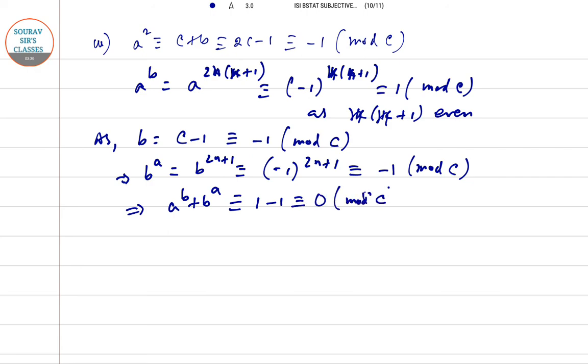So A to the power B plus B to the power A is 1 minus 1 equals 0 for modulo C. This gives you directly A to the power B plus B to the power A is divisible by C, as with respect to modulo C the remainder is 0. So this part is done.